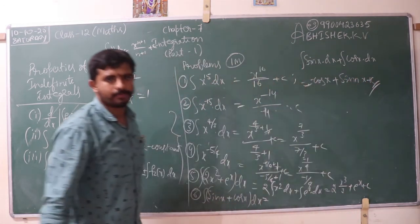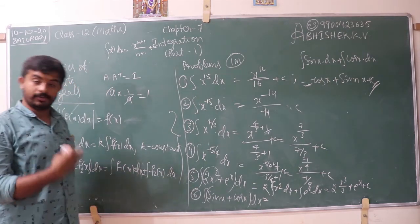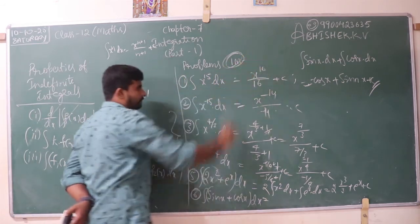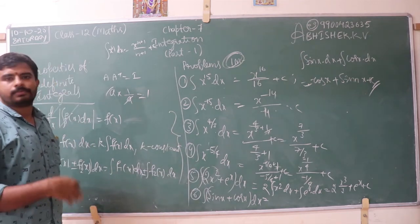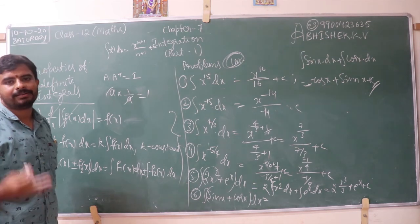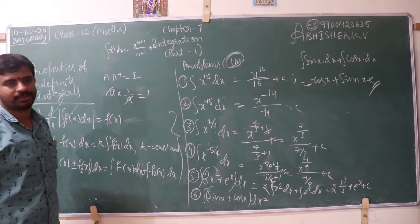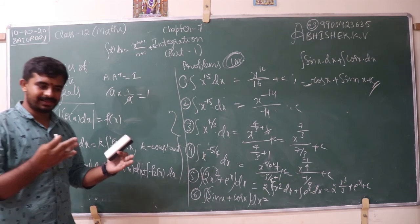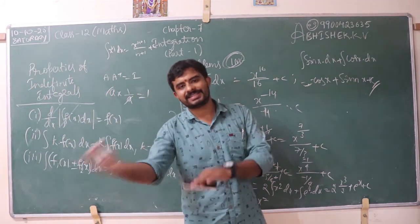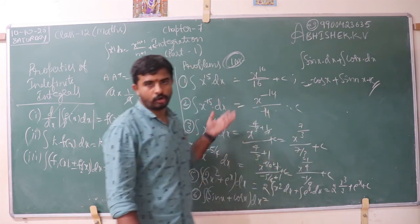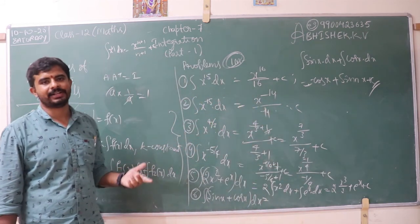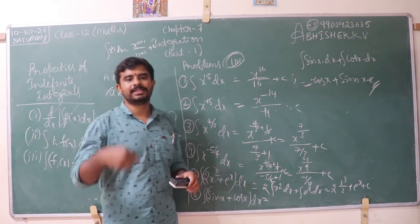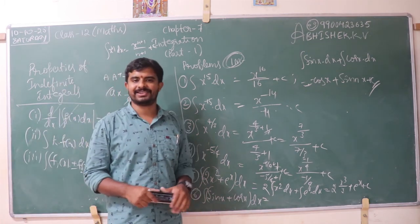Then integration of trigonometric functions: integral of sin x plus cos x dx. This is of the form f1 of x plus f2 of x, so it equals integral of sin x dx plus integral of cos x dx, which equals minus cos x plus sin x plus c. These are very important problems — you will definitely get these types of questions in your annual examination in Part A for one mark. Additional questions are available in my notes in the description of my YouTube channel. Thank you everyone, I will meet you in the next class with the next important topic in integration.